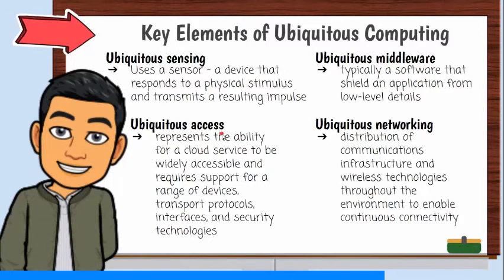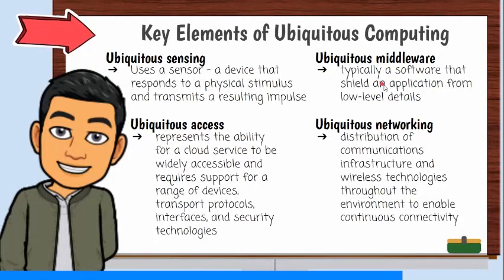Ubiquitous access represents the ability for a cloud service to be widely accessible by devices, transport protocols, interfaces, and security technologies. An example is when mobile computers or wearable computers access information. Next is ubiquitous middleware. It is typically software that shields an application from low-level details when interacting with ubiquitous networking, sensing, and access.